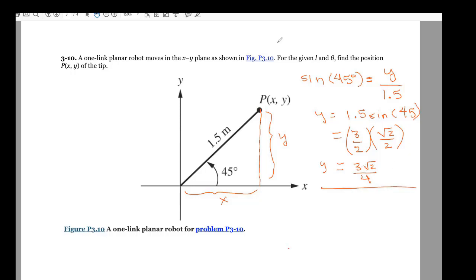Then I want to find X. X is the adjacent, so I just use the cosine of 45 degrees. And that's equal to X over 1.5. Again,